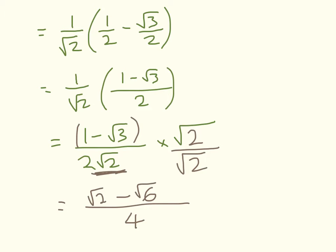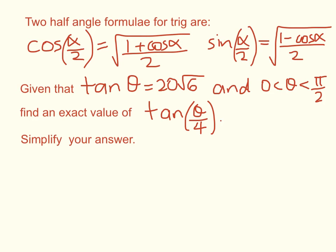Alright, now we're going to get into the harder of the two questions. We're given two half angle formulae for trig: cos(α/2) is equal to this thing here, and sine(α/2) is equal to this thing here. Then we're told given that tan θ is 20√6 and θ is between 0 and π/2, find an exact value for tan(θ/4) and simplify your answer.